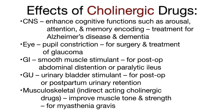On the GI system, cholinergic drugs act as a smooth muscle stimulant and are used for post-op abdominal distention or paralytic ileus. On the GU system, they act as a urinary bladder stimulant used for post-op or postpartum urinary retention. On the musculoskeletal system, indirect acting cholinergic drugs improve muscle tone and strength and are used for myasthenia gravis.